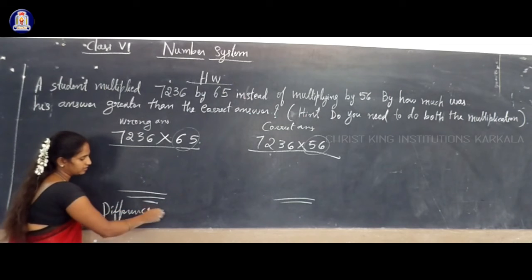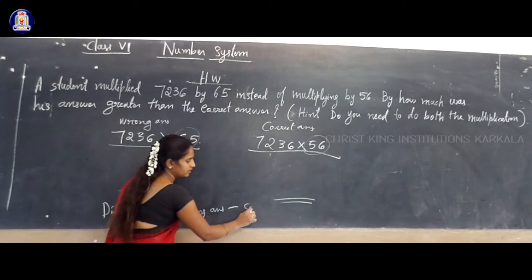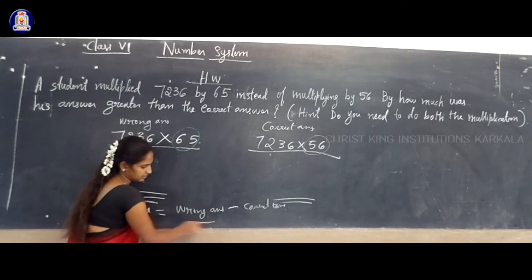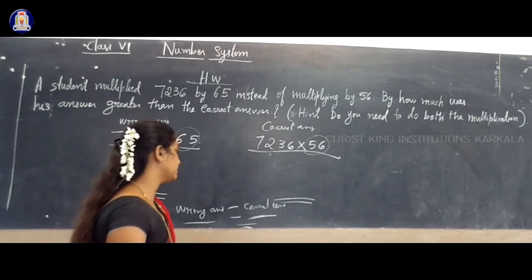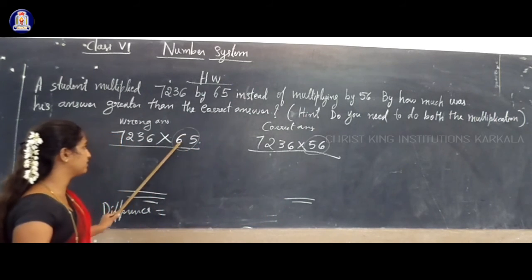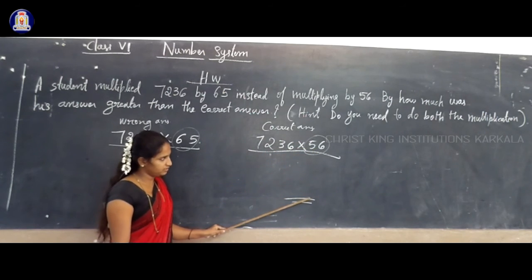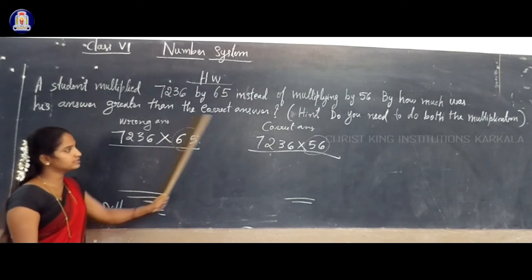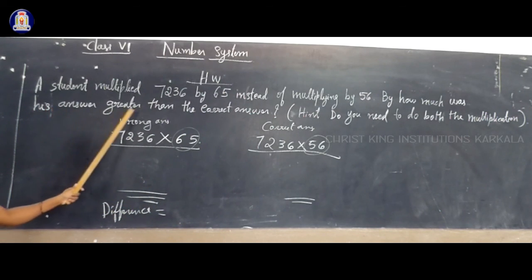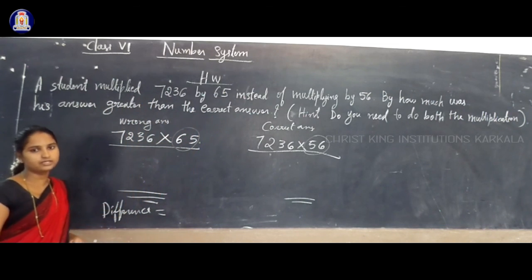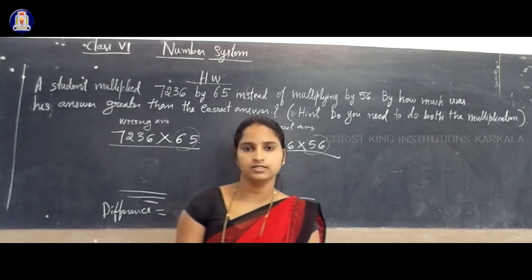So, you have to subtract the numbers. Wrong answer minus correct answer — that is the hint. From the wrong answer, you have to subtract the right answer, and you get the difference. Then we can say by how much the answer is greater than the correct answer. Multiply the two sets of numbers, then find the difference. That is the answer to this question. Thank you.